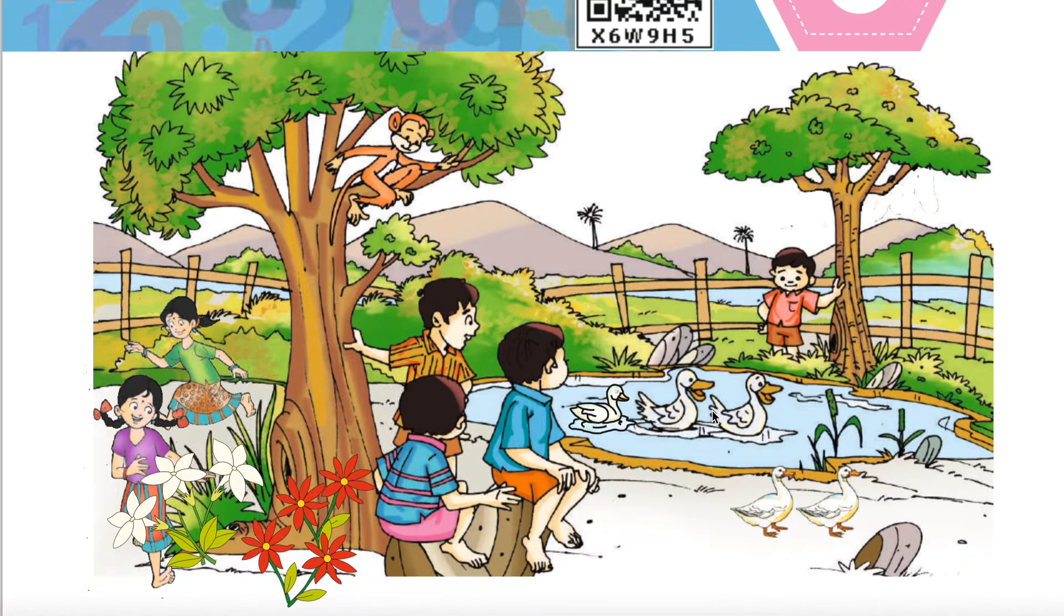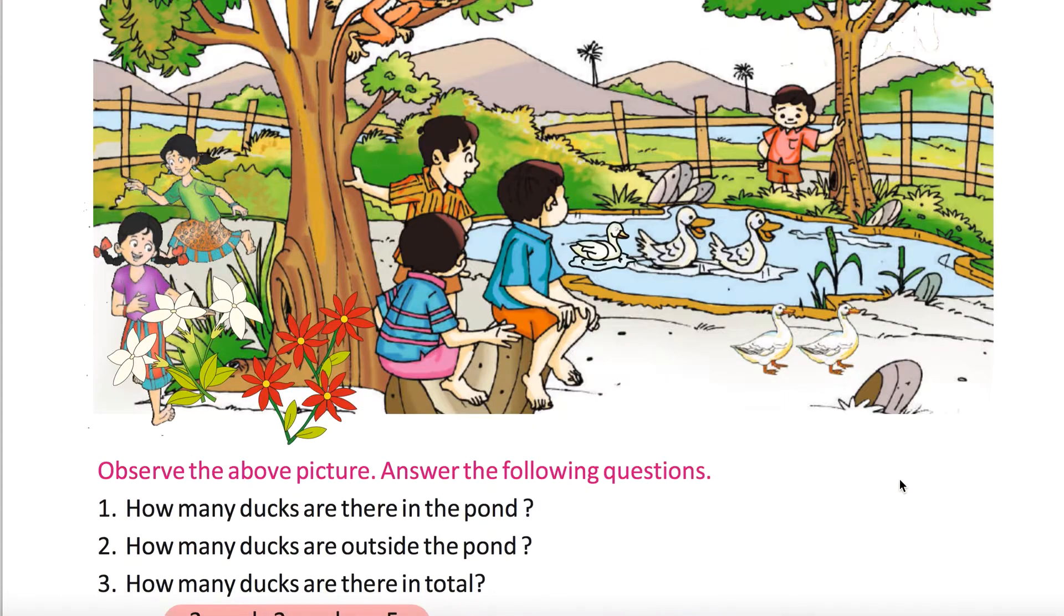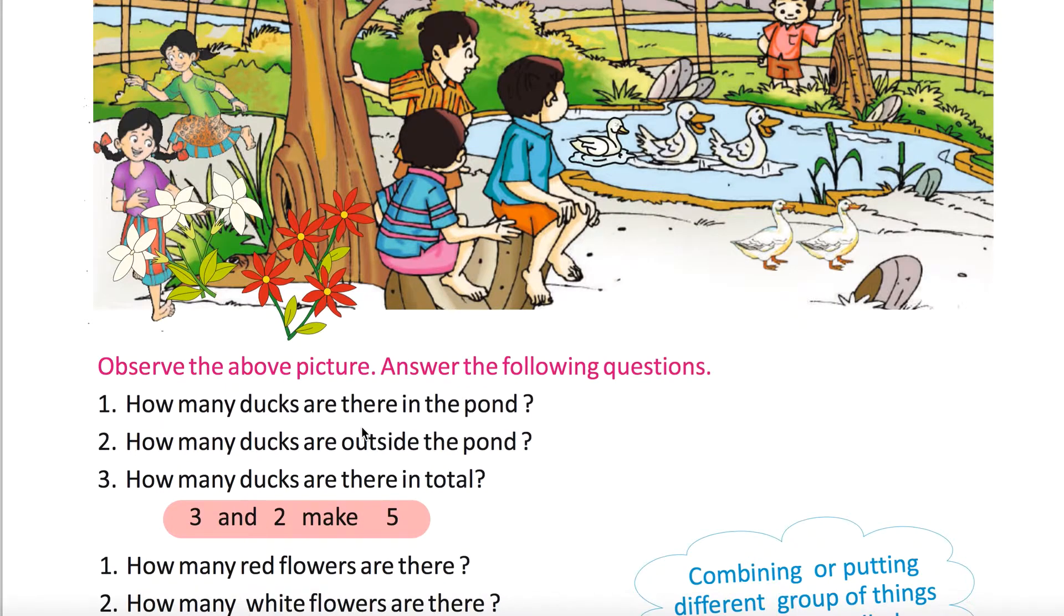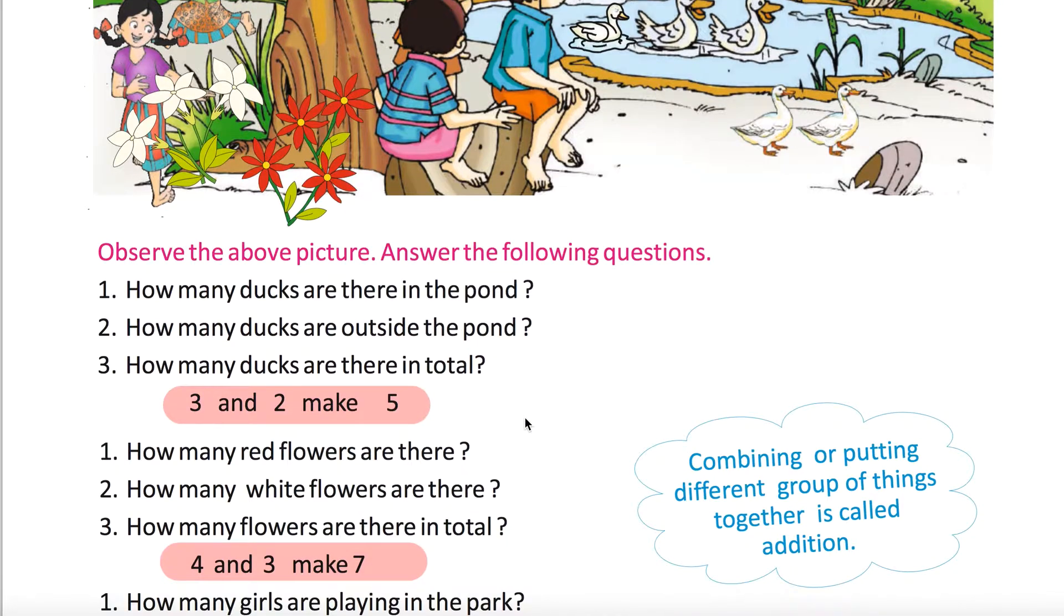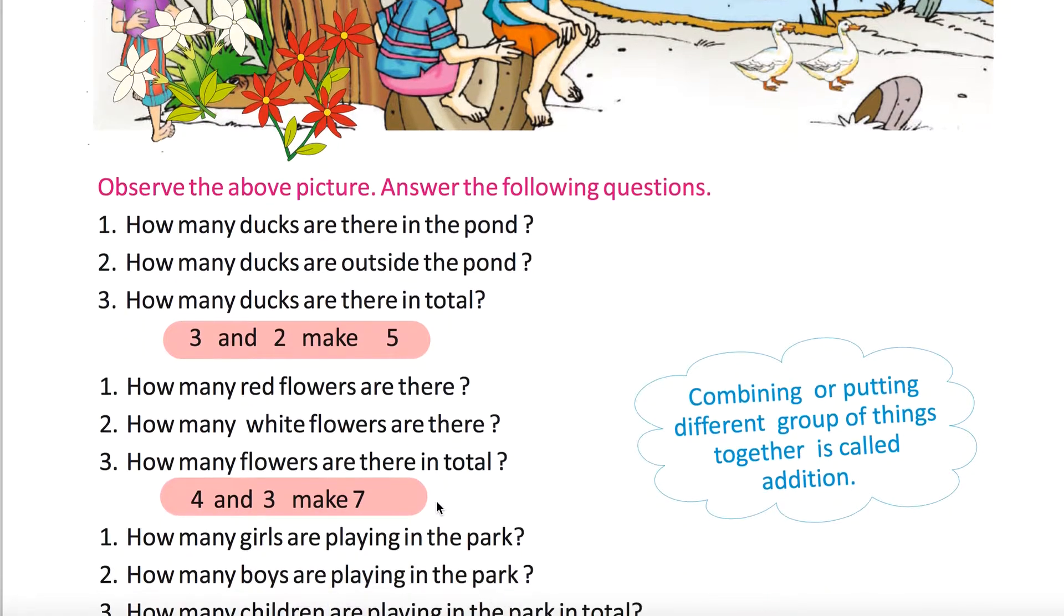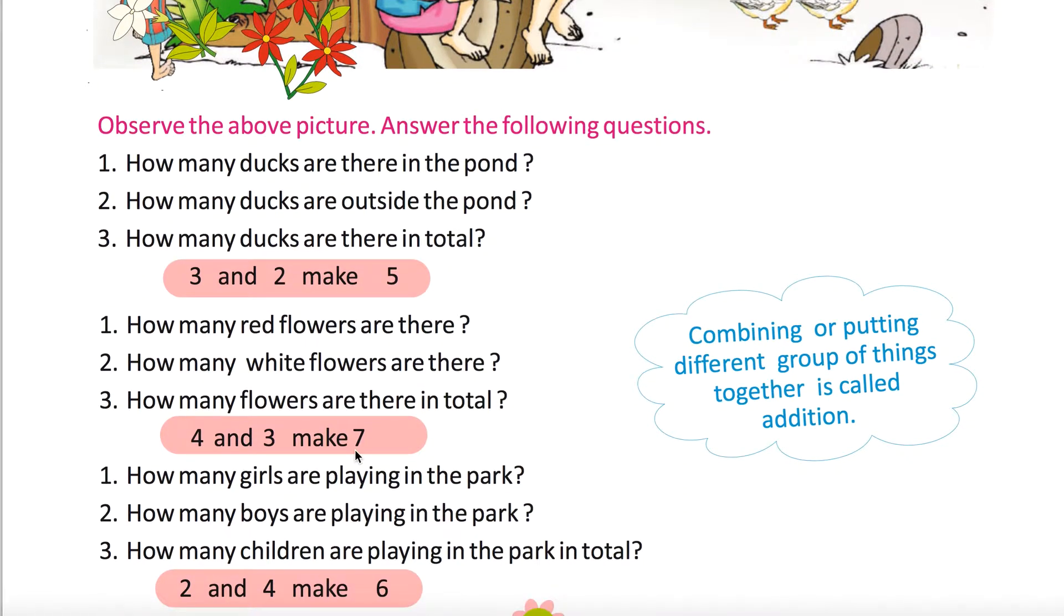Three ducks inside the pond and two ducks outside the pond. These red flowers are four, white flowers are three. How many ducks are there in the pond? Three. How many ducks are outside the pond? Two. How many ducks are there in total? Three plus two equals five. How many red flowers are there? Four. How many white flowers are there? Three. So how many flowers are there in total? Four plus three equals seven.